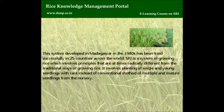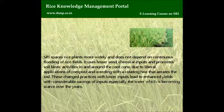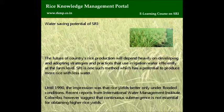SRI is a system of growing rice which involves principles that are at times radically different from the traditional ways of growing rice. It involves planting of single and young seedlings with care, instead of the conventional method of multiple and mature seedlings from the nursery. SRI spaces rice plants more widely, does not depend on continuous flooding, uses lesser seed and chemical inputs, and promotes soil biotic activities in and around the root zone. These changed practices with lower inputs lead to enhanced yields with considerable savings of inputs, especially water, which is becoming scarce over the years.